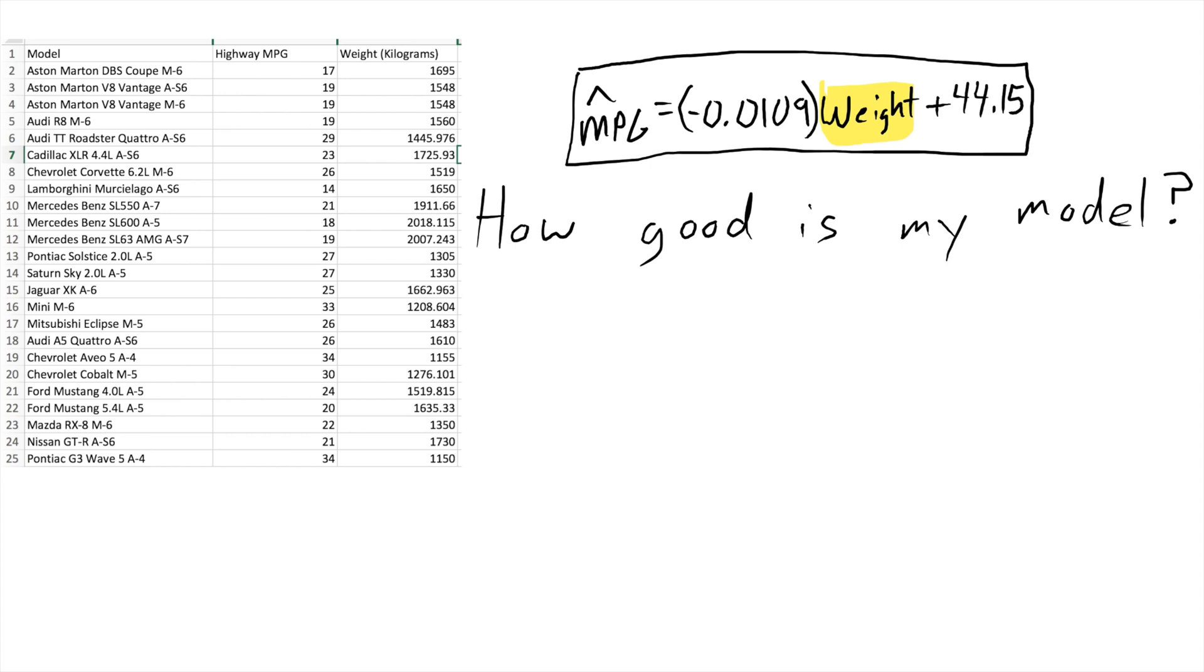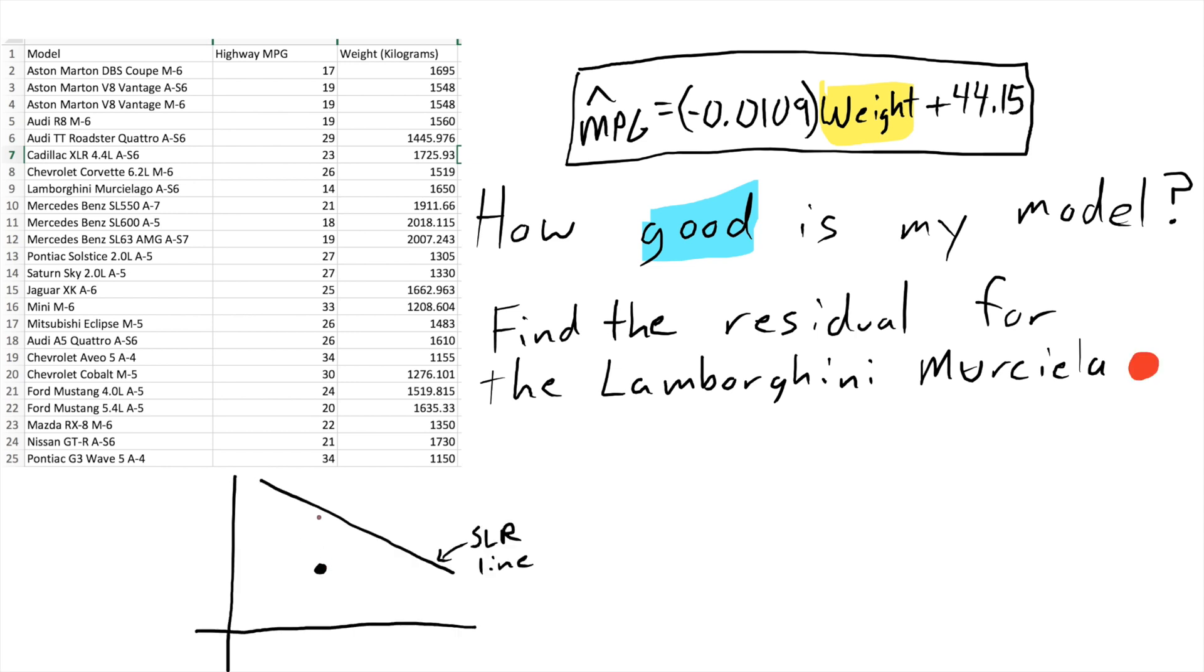So we have this simple linear regression line. And we might want to know, hey, we're making all these predictions. How good are they? Does this model seem to be reasonable? Is this giving us useful information? And one way we can do this is by finding what we call the residual for a given data point. And so what that might look like is something like this. We might be asked to find the residual for the Lamborghini Murcielago, that fancy sports car. So what a residual is, is you have a data point and that data point might not be sitting perfectly on the line. And the residual is just the distance that point is from the line. It just gives us a rough idea of how close did this line come to the actual observed data value for this data point. So that distance is what's known as the residual.